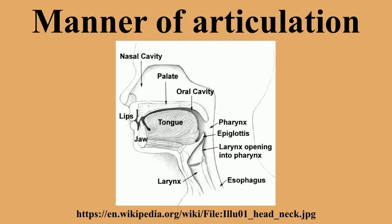Other airstream mechanisms: All of these manners of articulation are pronounced with an airstream mechanism called pulmonic egressive, meaning that the air flows outward and is powered by the lungs. Other airstream mechanisms are possible. Sounds that rely on some of these include ejectives, which are glottalic egressive — that is, the airstream is powered by an upward movement of the glottis rather than by the lungs. Stops, affricates, and occasionally fricatives may occur as ejectives. All ejectives are voiceless, or at least transition from voiced to voiceless.